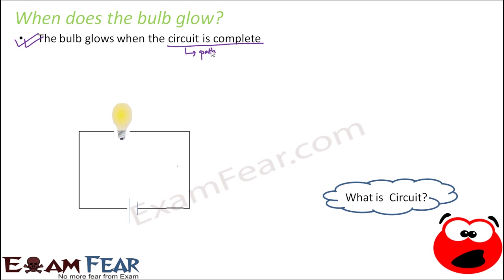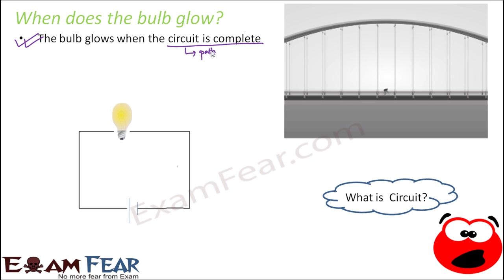Let us take a simple example to understand what a circuit is. Suppose you have a bridge that connects two towns, A and B. On one side you have A, on the other side you have B. If you want to reach from A to B, you need to cross this bridge — there is a big river between them. Here you can see a person on a cycle traveling from A to B across the bridge, which provides the path to travel.